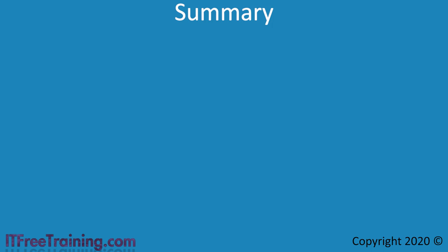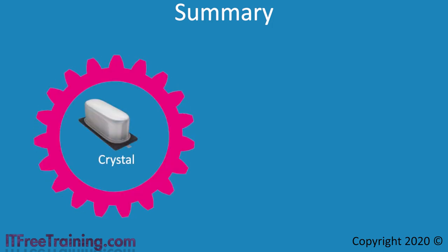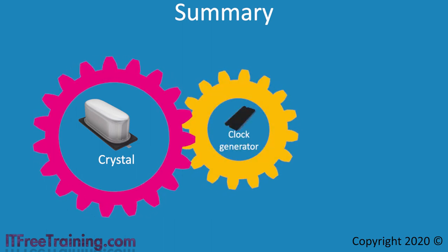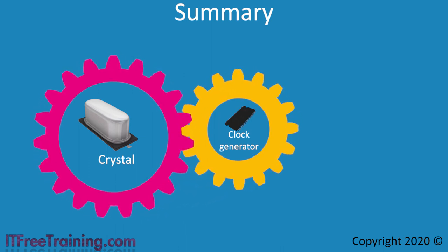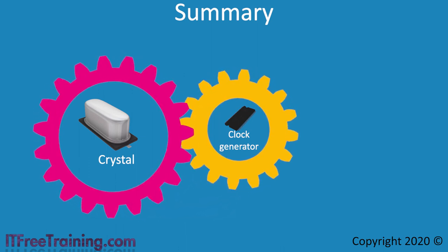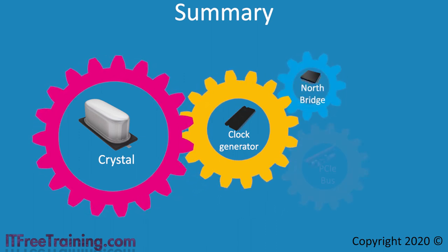It may be difficult to understand how all the different clock speeds are generated. To understand it better, consider they are cogs in a system. The crystal generates a slow frequency. Slow, but very accurate. The signal is used by a clock generator. The clock generator generates additional clock rates. The clock rate is used by devices like the North Bridge and PCI Express bus.